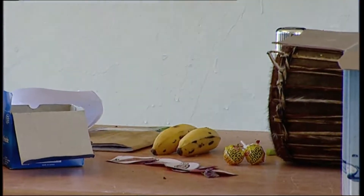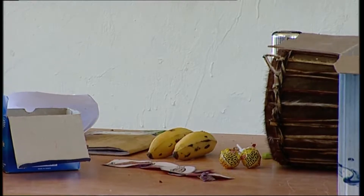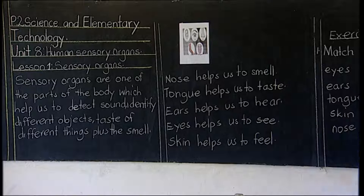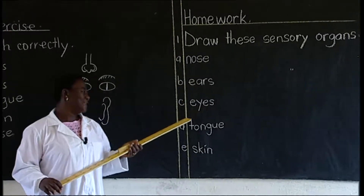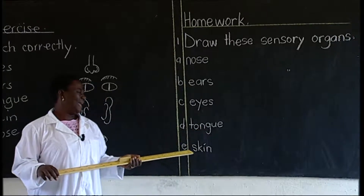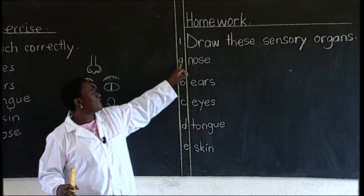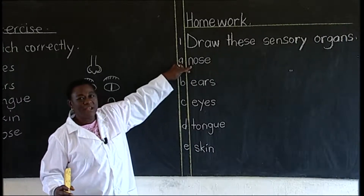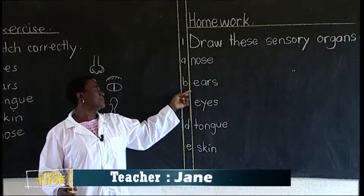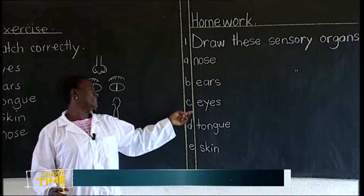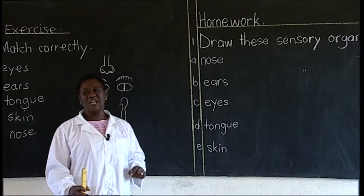We have the homework of the day. Draw these sensory organs: A — nose, B — ears, C — eyes, D — tongue, E — skin. I want big diagrams. After writing A and nose, count 1, 2, 3, 4 lines, then write B. After writing B, count again four lines — 1, 2, 3, 4 — then write C. The space you are leaving is where you will draw when you reach home. Copy properly and once you finish, keep your book.